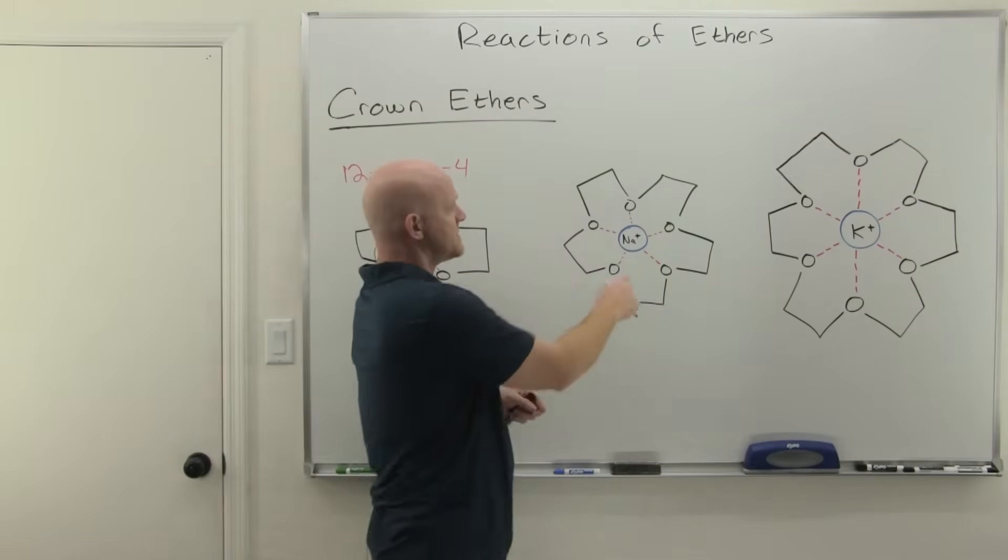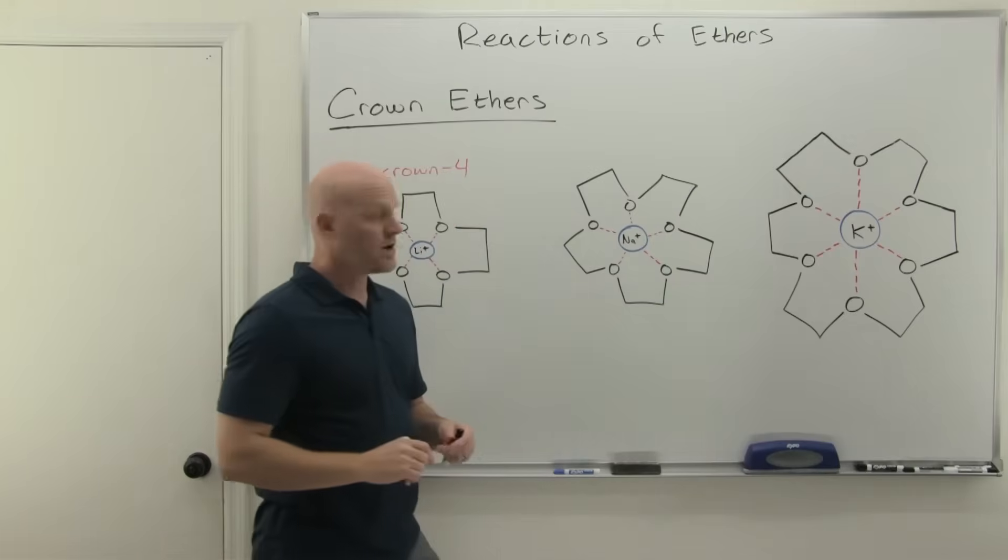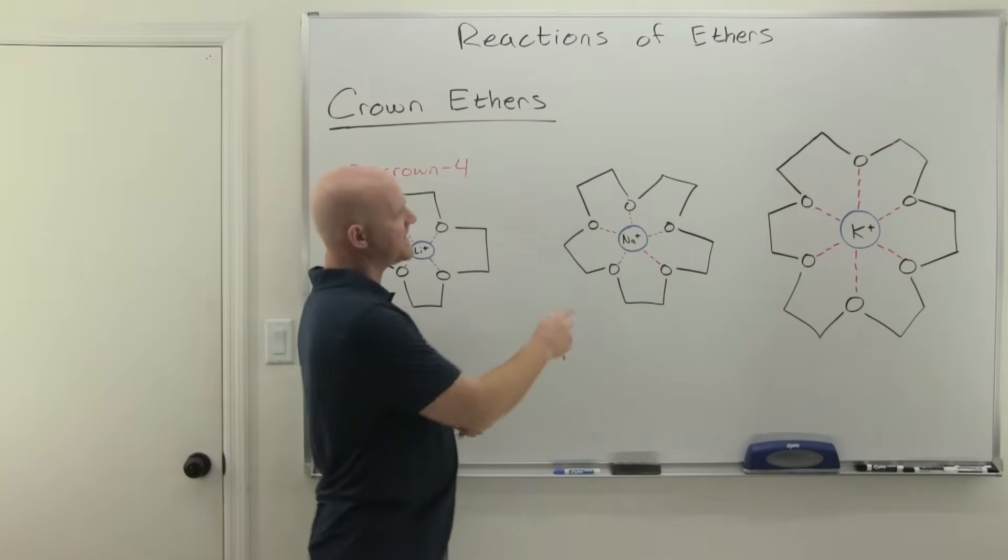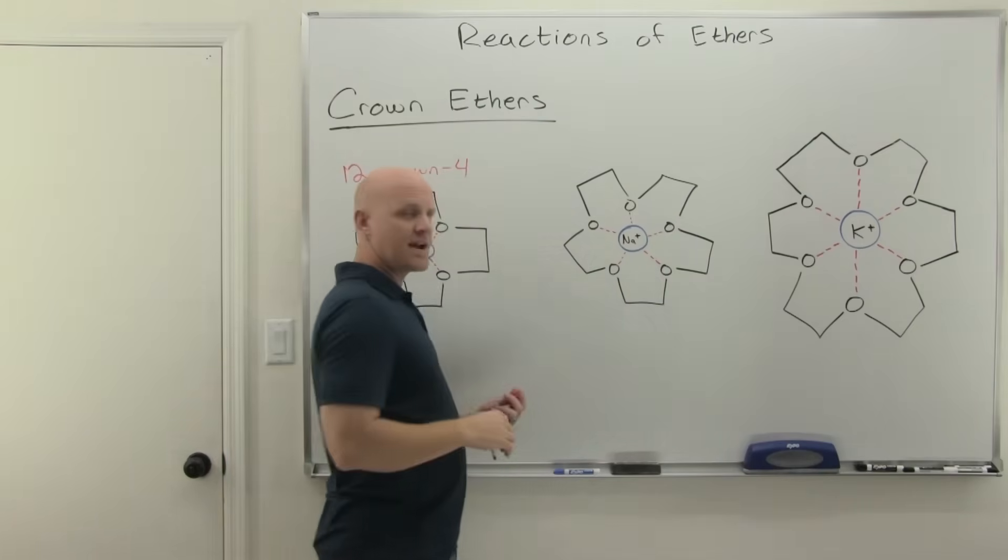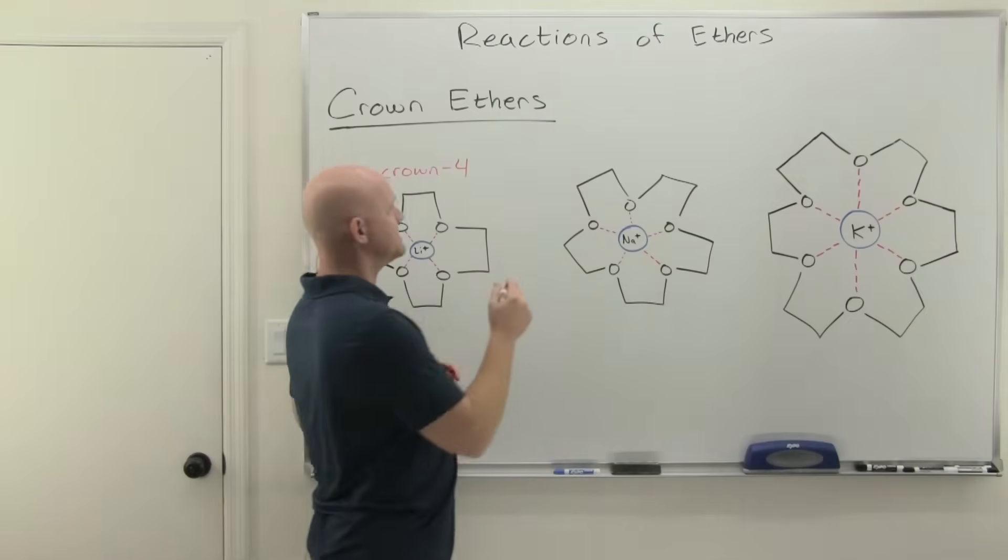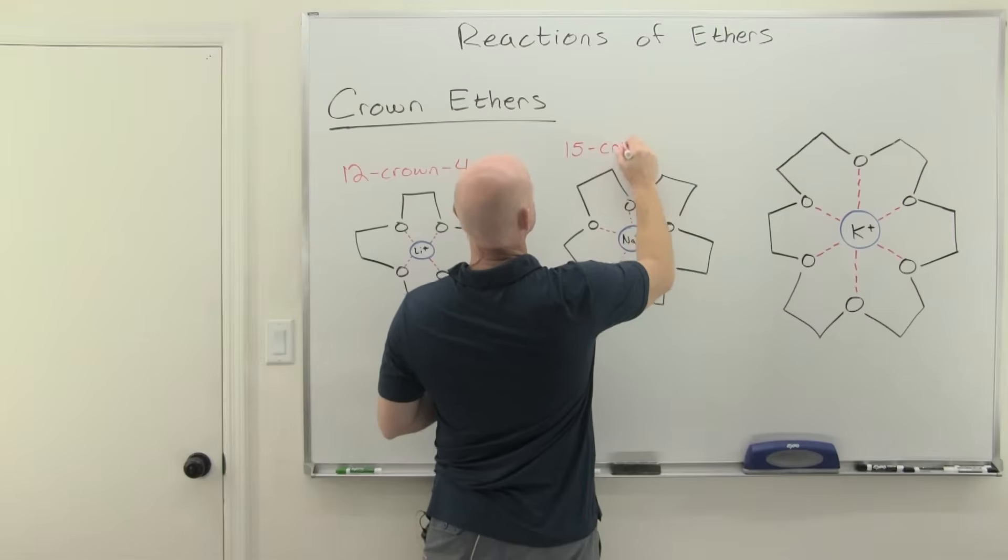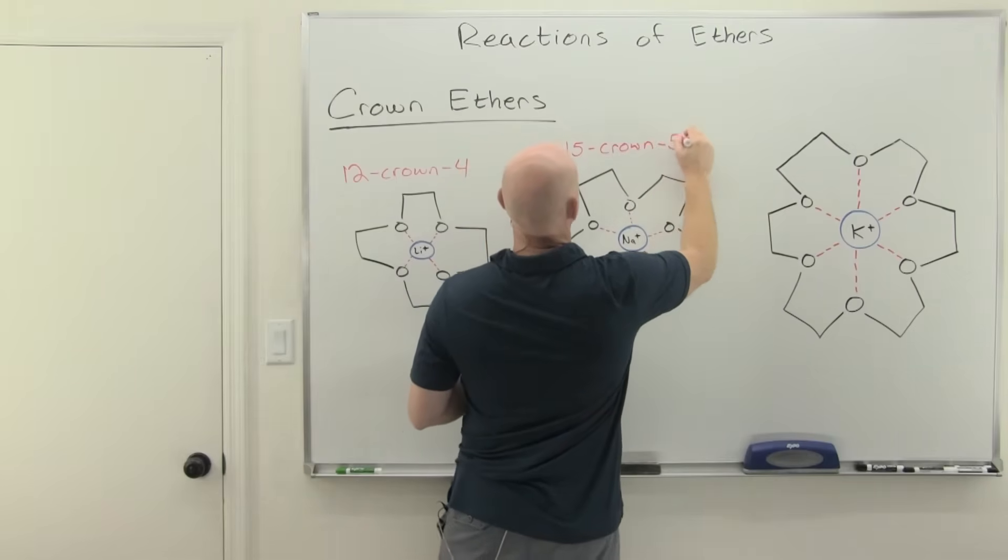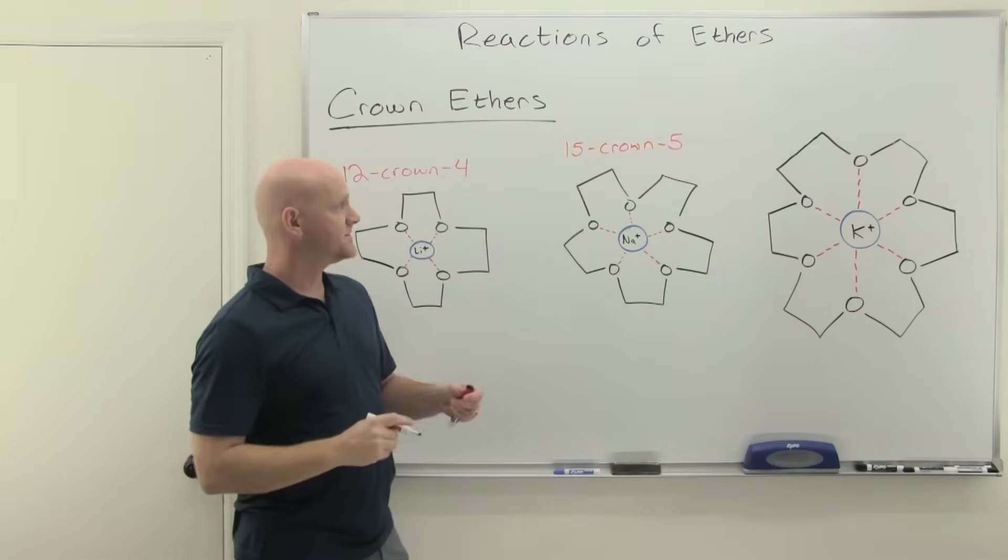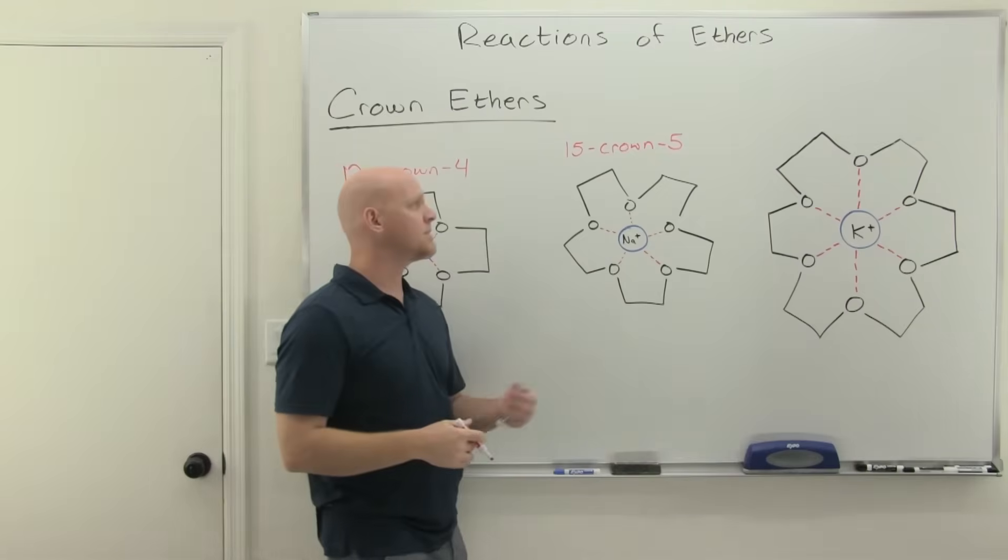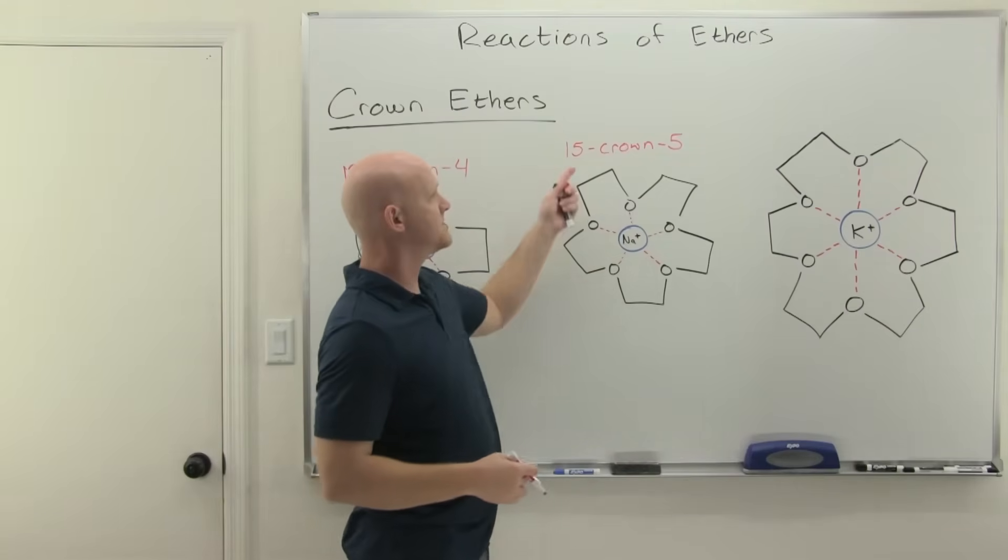If we move up to the next size to solvate sodium ions, you need to get a little bit bigger, so we need to add one more oxygen. Adding one more oxygen adds two more carbons. This is 15-crown-5, so it's got 15 total atoms—five oxygens and ten carbons.